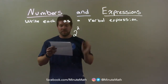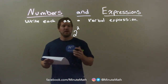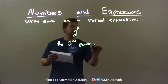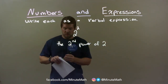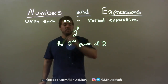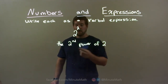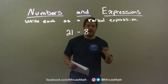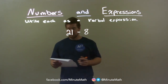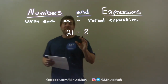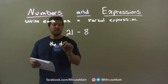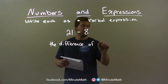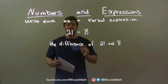2 to the second power. A way we can write this: the second power of — so we're talking about the power first — the second power of, and the number being the base: 2. So here we have the second power referring to that exponent 2, and then 'of 2' is the base. So 21 minus 8 — we have 21 minus 8 here. We need to write this as a verbal expression. With subtraction, we can write that as the difference: the difference of — and our two numbers — 21 and 8. Our final answer.